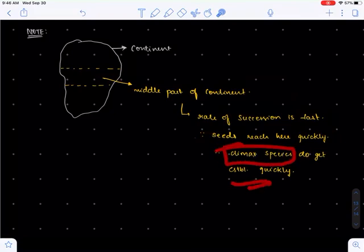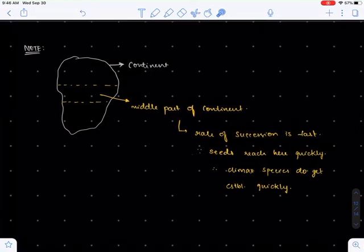As a result, it becomes easy for climax species to be established here. Why? If pioneer species don't get established, it becomes difficult for climax species to establish. We know that for climax species to establish, secondary succession must take place, and this occurs only when the soil becomes fertile enough to support seed growth.